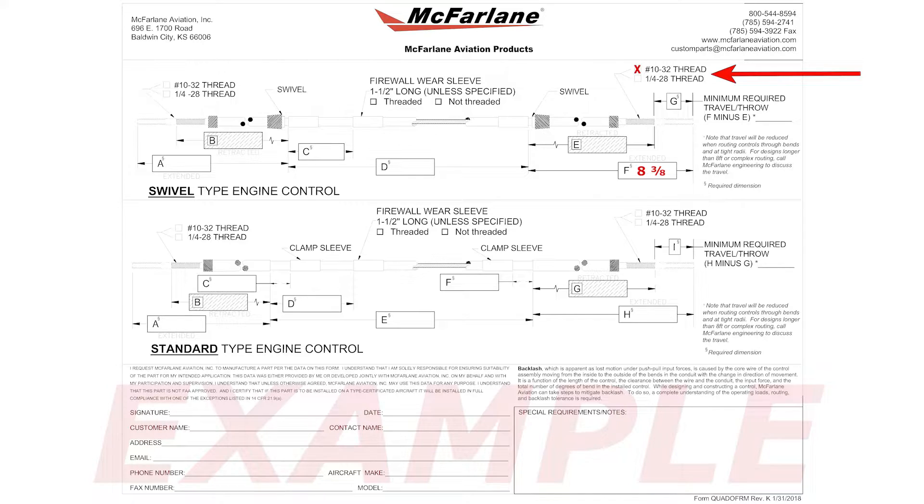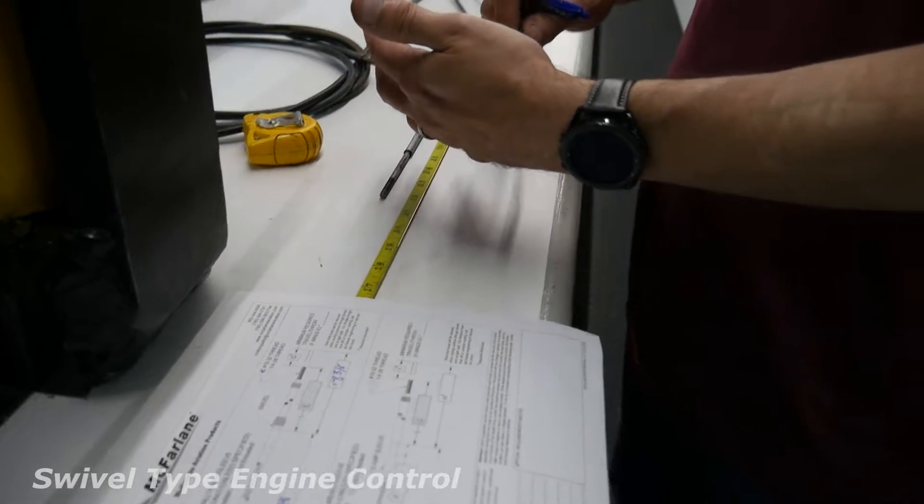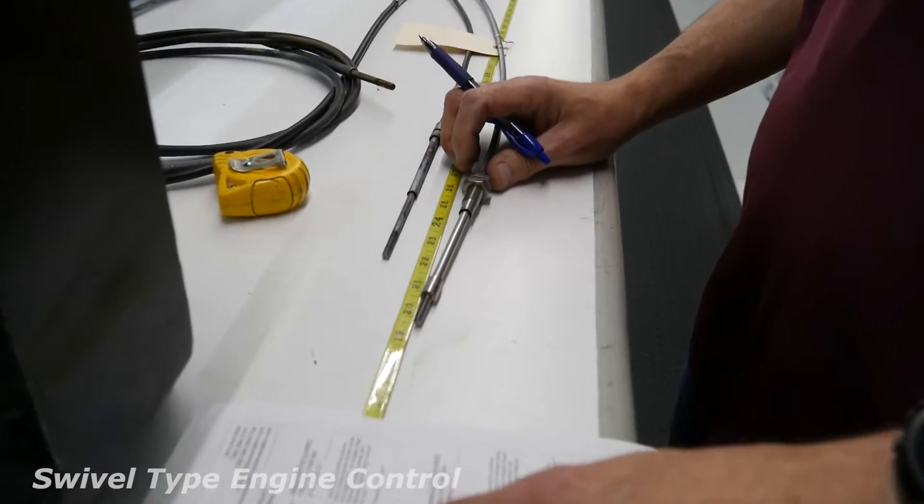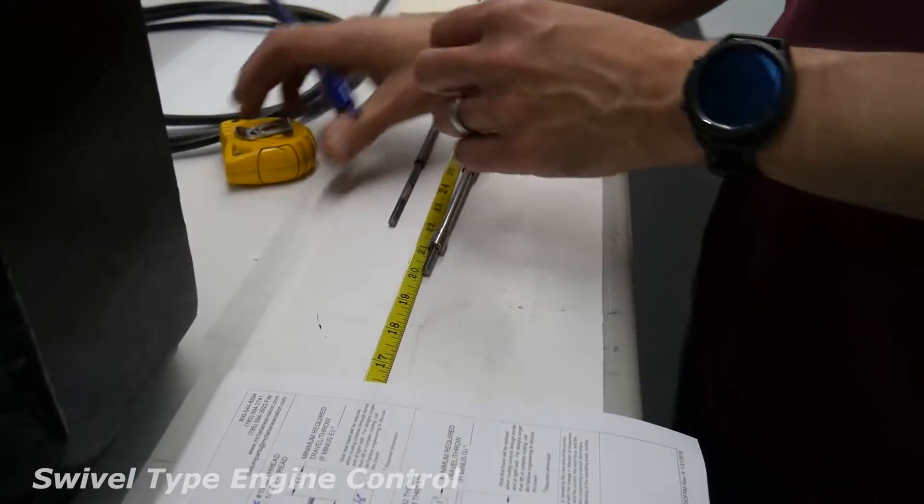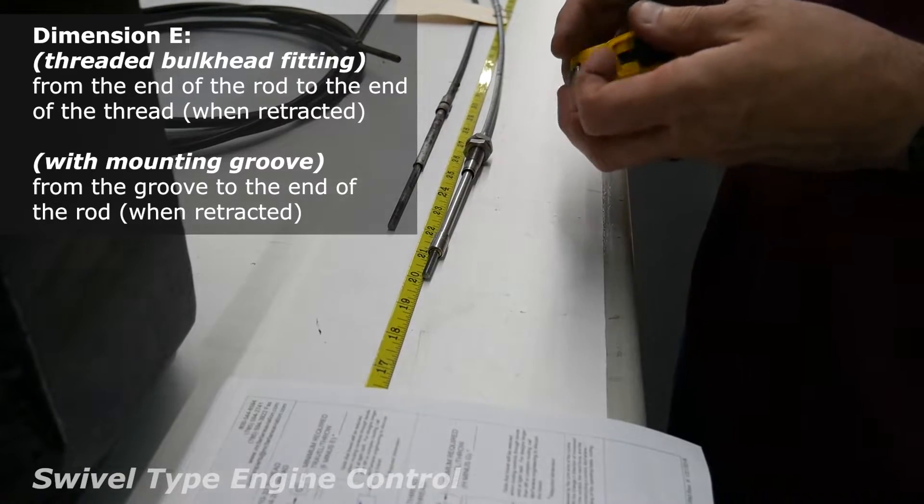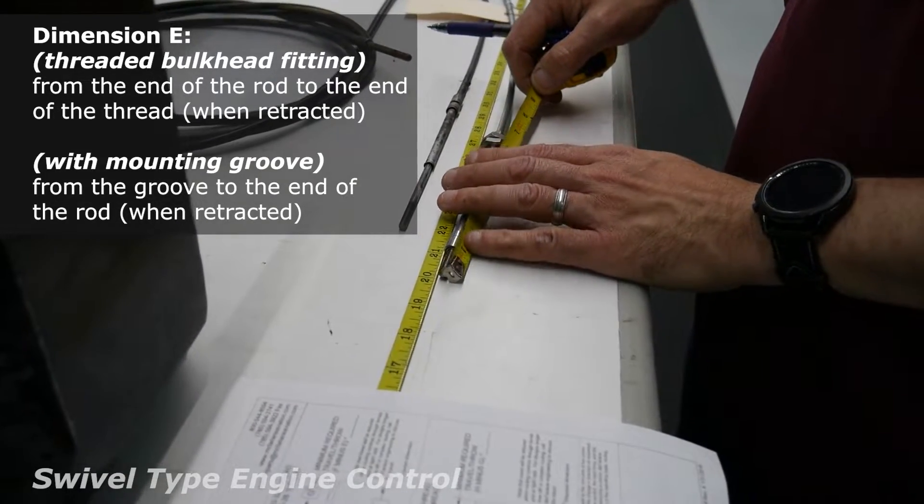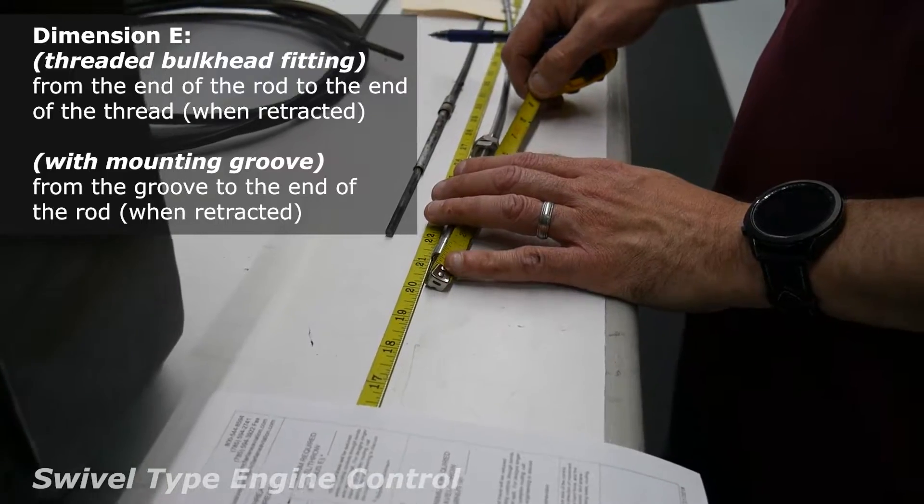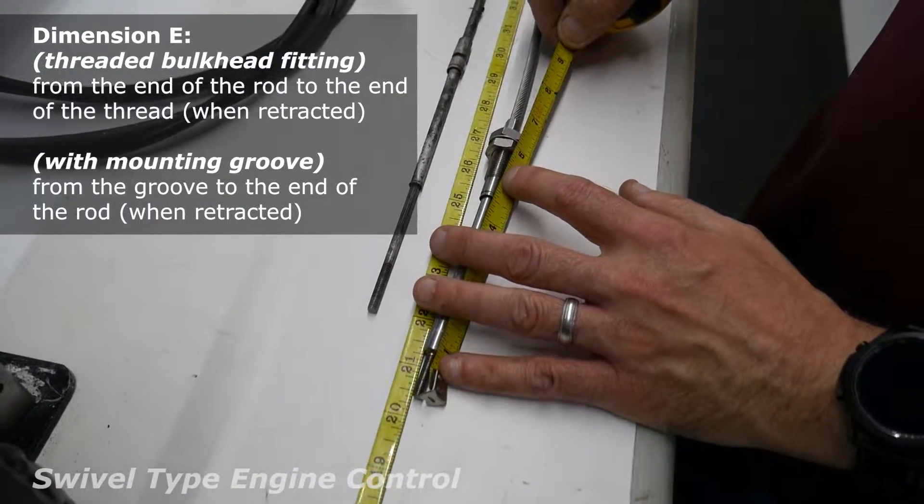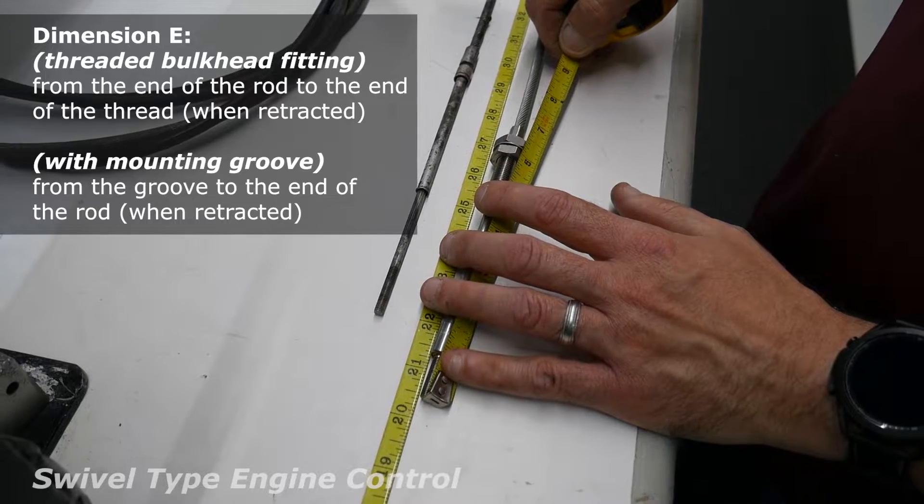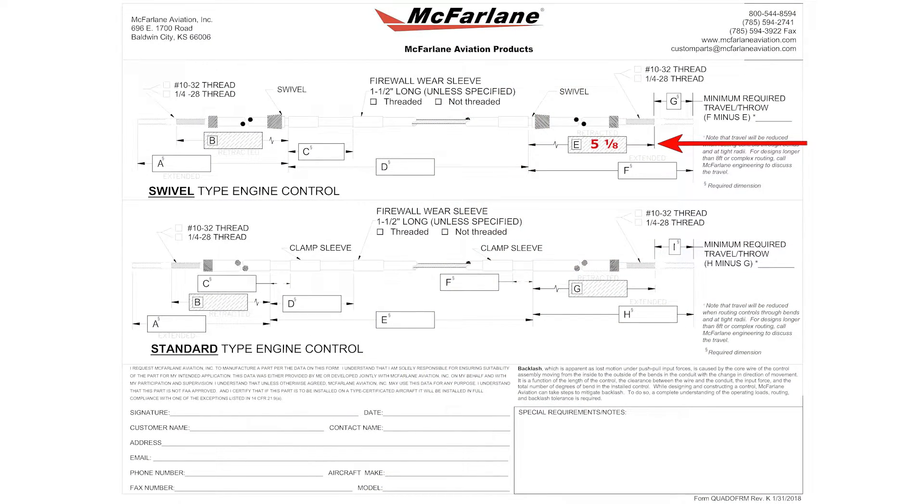Then, in order to find the travel, you can either go ahead and get your E and B dimension. Make sure this would be the E side, which would be to the thread from the end of the rod. So then you can subtract the two to get your travel.